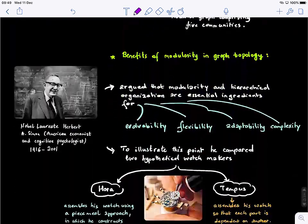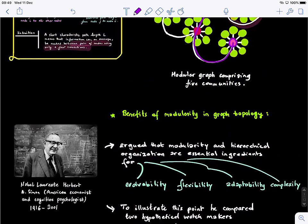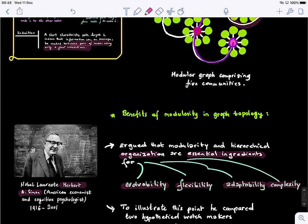For example, I'll tell you a short story. The Nobel laureate Herbert Simon - he's an American economist and cognitive psychologist - argued that modularity and hierarchical organization are essential ingredients for evolvability, flexibility, adaptability, and complexity of systems. So if you want a system that has all these attributes - it's evolvable, easily adaptable, flexible, although highly complex - then you should think about formalizing or building your system in a modular way.